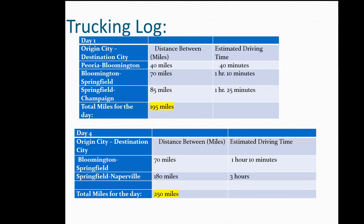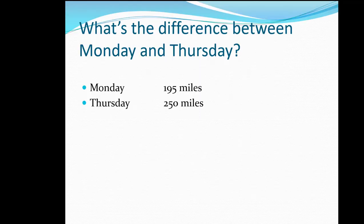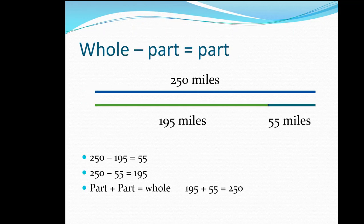Another road trip. Let's compare the miles being driven each day on Murphy's driving log. How much more did Murphy drive on day 4 than day 1? What's the difference between Monday and Thursday? The whole: Thursday's 250 miles. The part: Monday's 195 miles. Subtract to find the missing part. Whole minus part equals part. 250 minus 195 is 55.